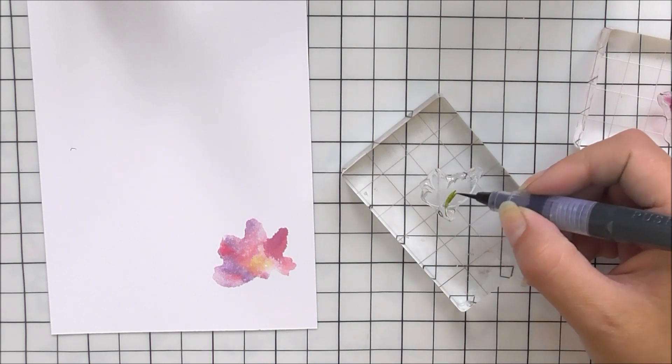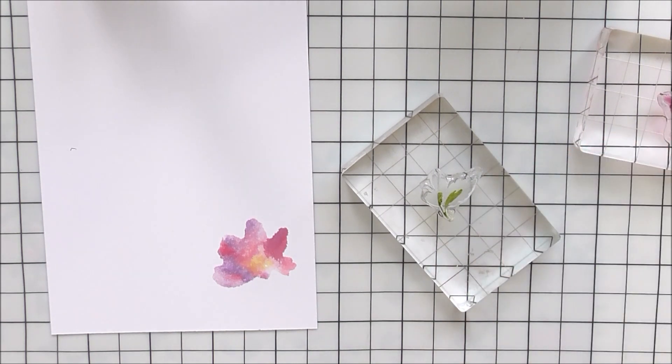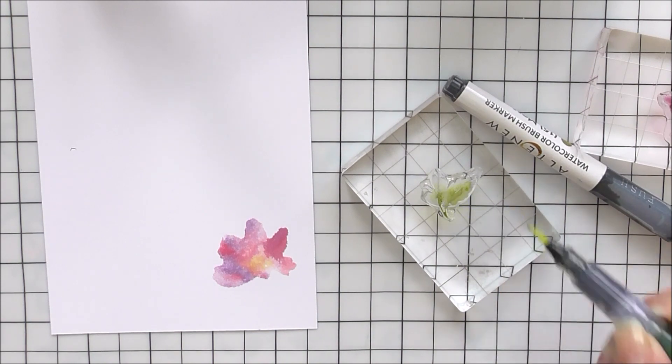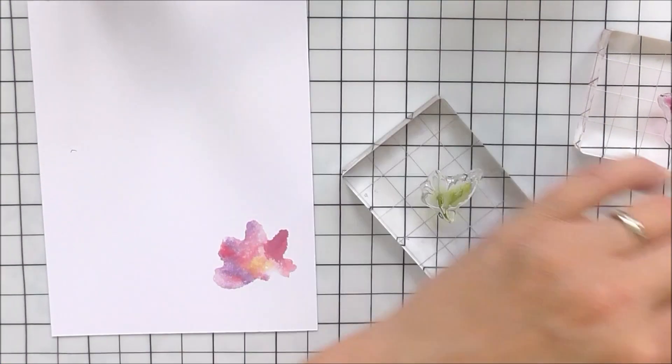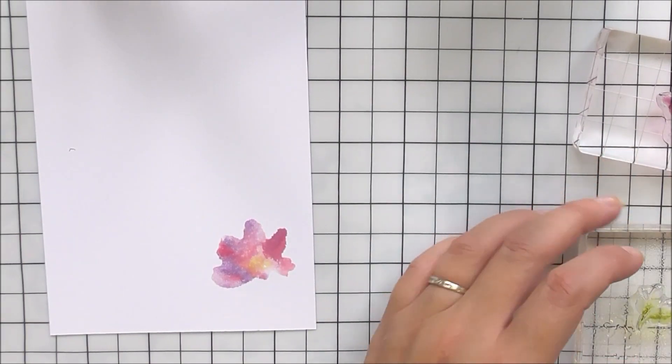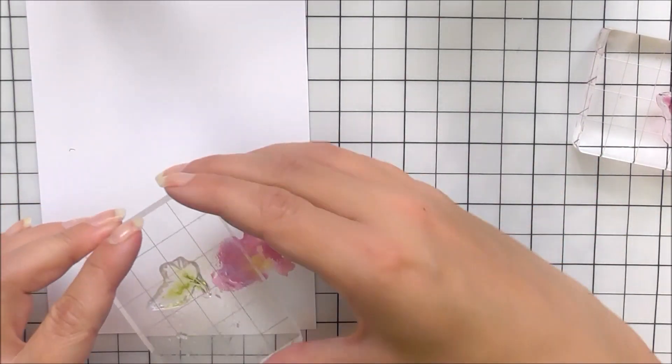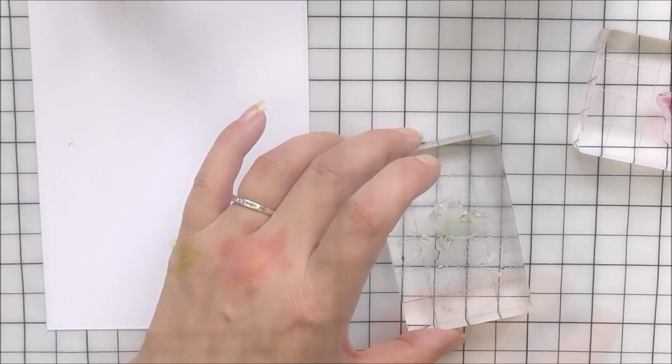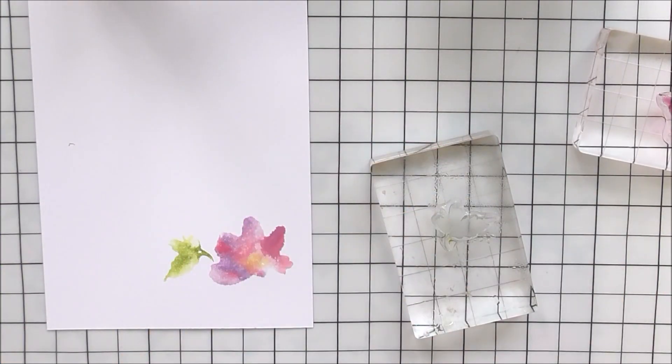I'm then going to use Moss and Lime Aid for the leaf, so I have the leaf image onto my block and I'm just adding a little bit of that Moss and then some of the Lime Aid. Again, I haven't colored the whole image. I'm just going to spritz this to move the ink around and then stamp this into place onto that piece of watercolor cardstock.